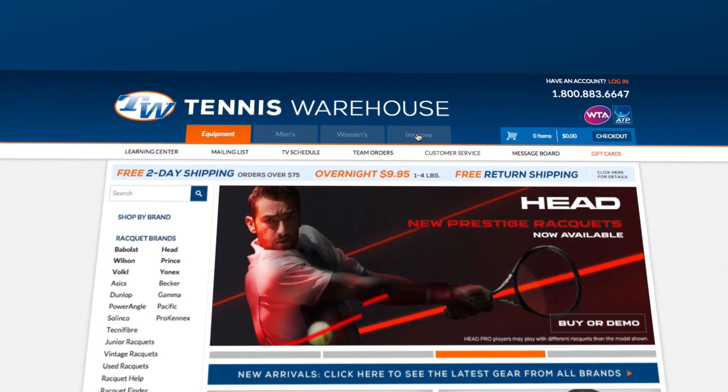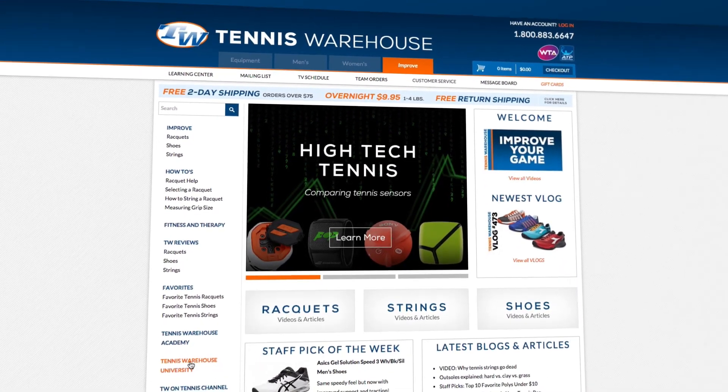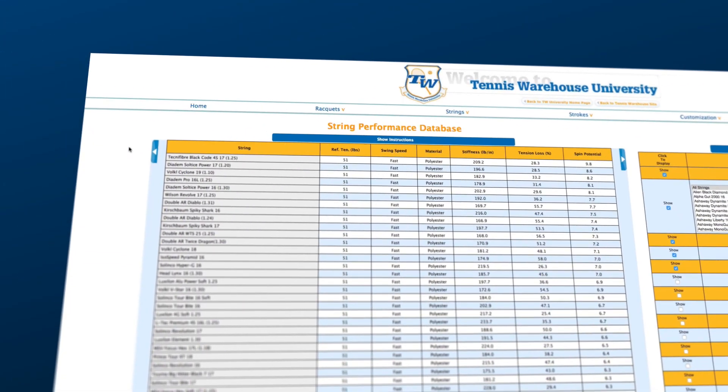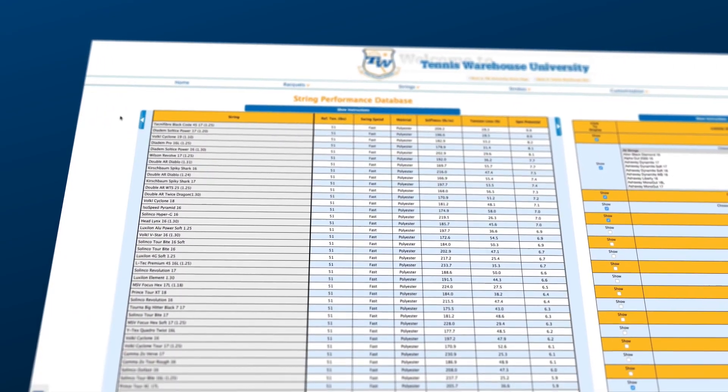So I really encourage you to get out there, get on the Tennis Warehouse University, learn a bit more about string stiffness, find out the right string stiffness number for the strings that you like, and then that'll really help you find other strings that you're going to enjoy the playability of in your rackets. That's all I've got for this week. Thank you so much for watching.